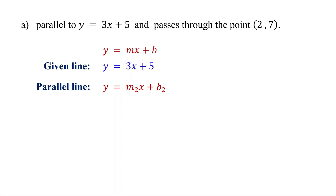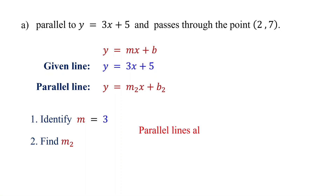The first step is to identify the slope of the given line. In this case, it is 3, so m equals 3. That's all the information we need from the equation of the given line. The next step is to find the slope of the parallel line. Remember, parallel lines always have the same slope. This means the slope of the parallel line equals the slope of the given line, so m2 also equals 3.